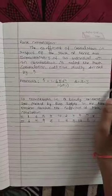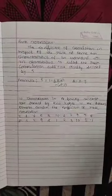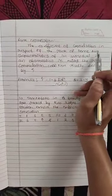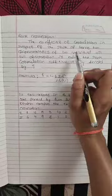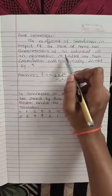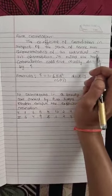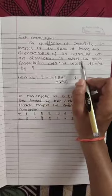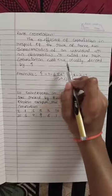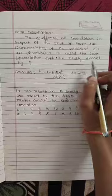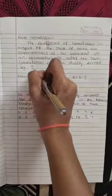First we will see what is meant by rank correlation. The coefficient of correlation in respect of the rank of two characteristics of an individual or an observation is called the rank correlation coefficient. It is denoted by delta.